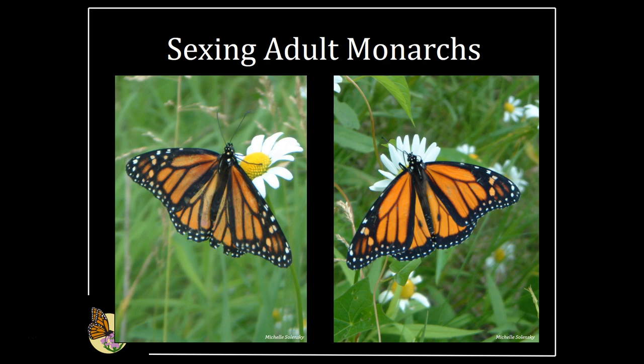Male and female adults look different. Males have spots on their hind wings called androconal patches. In monarchs these serve no purpose, but in other butterfly species they produce and release pheromones used to attract mates. Females are slightly duller orange and have thicker wing veins than males. For the Integrated Monarch Monitoring Program, you would only need to identify the sex of the monarch if you're rearing monarchs for the survival and parasitism activity (Activity 4). These characteristics can be hard to see in the field, and you will not need to differentiate between males and females while surveying your plot.